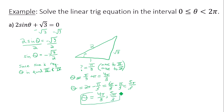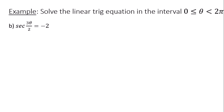Those are my two solutions in the interval 0 to 2pi. Next, this one looks a little bit different because instead of just having theta on the inside of the trig function, we have 3 theta over 2. One way to get around this is to pretend like we just have one given variable inside the trig function. So let's call 3 theta over 2 beta. Everything will be in terms of beta for now, then we'll convert back to 3 theta over 2.